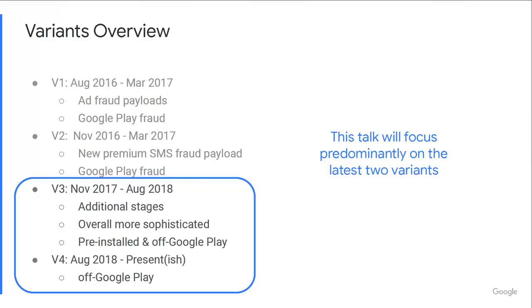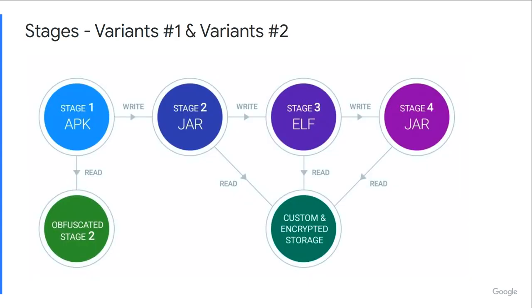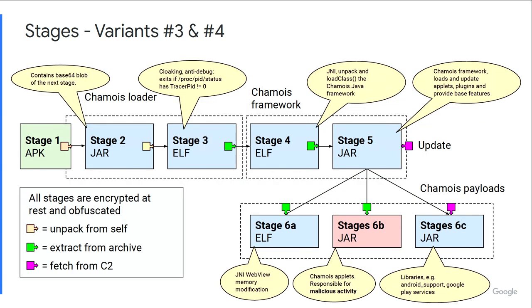This is the overview. I've mentioned four different variants. We're going to focus on Variant 3 and Variant 4, because they're the most technically sophisticated and current. Back in 2016 with Variants 1 and 2, they were already sophisticated — combining APKs, unpacking from a custom encryption archive format, different jars, as well as using native code. After their hiatus, they came back for Variants 3 and 4 and moved from a 4-stage botnet to a 6-stage effort.